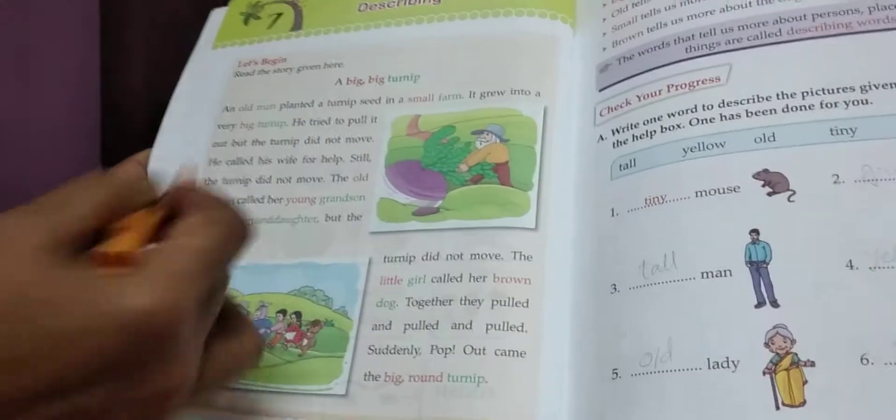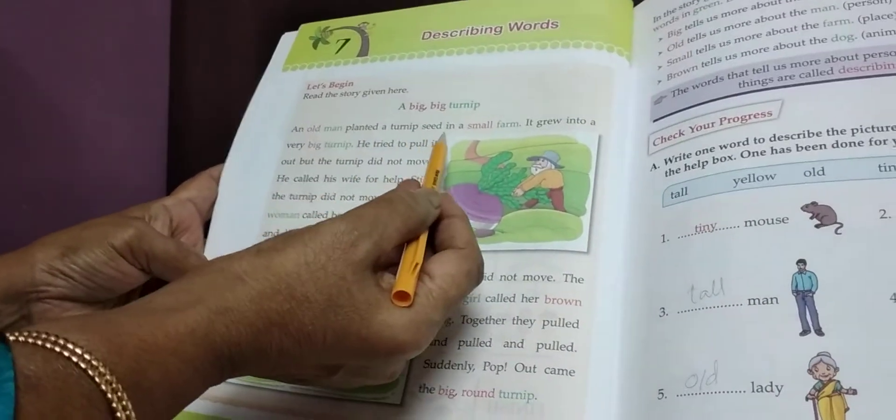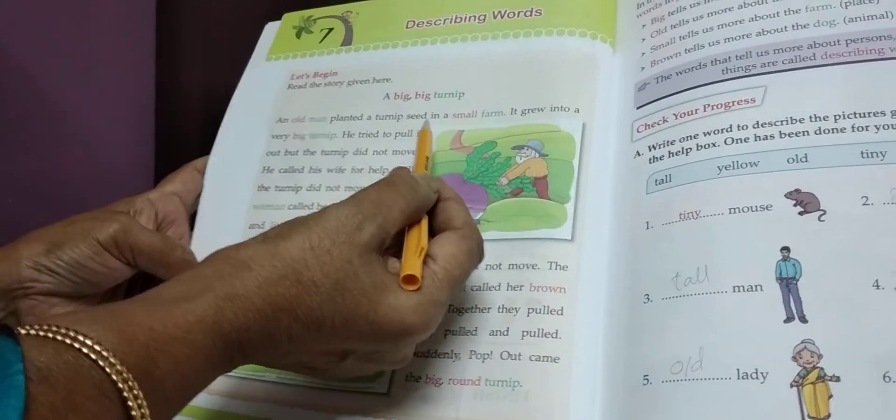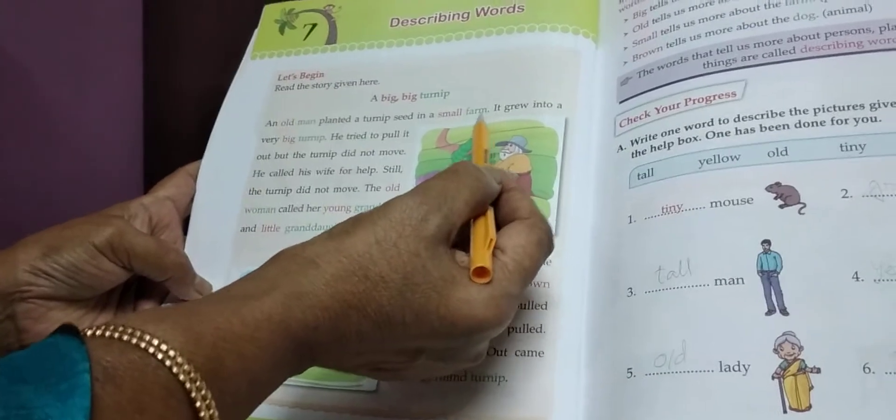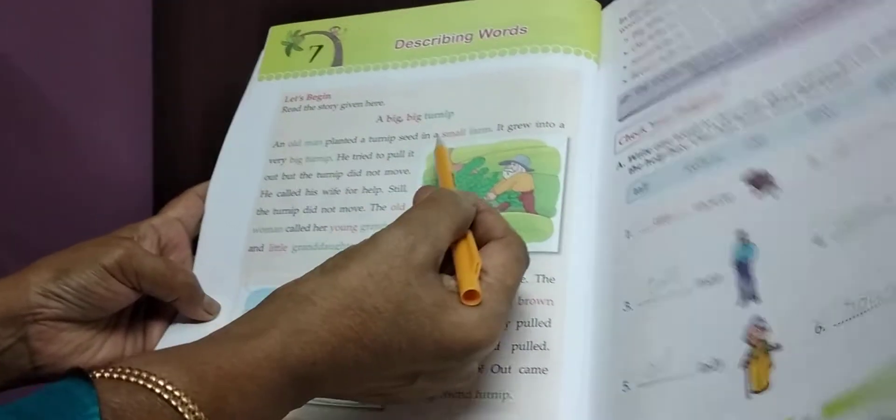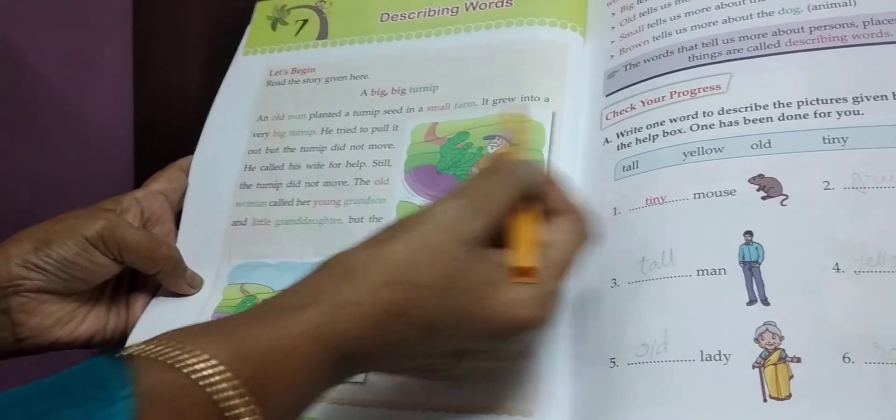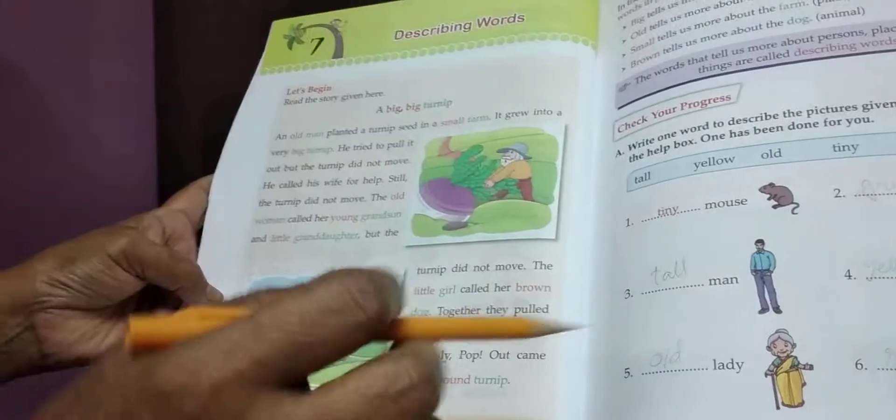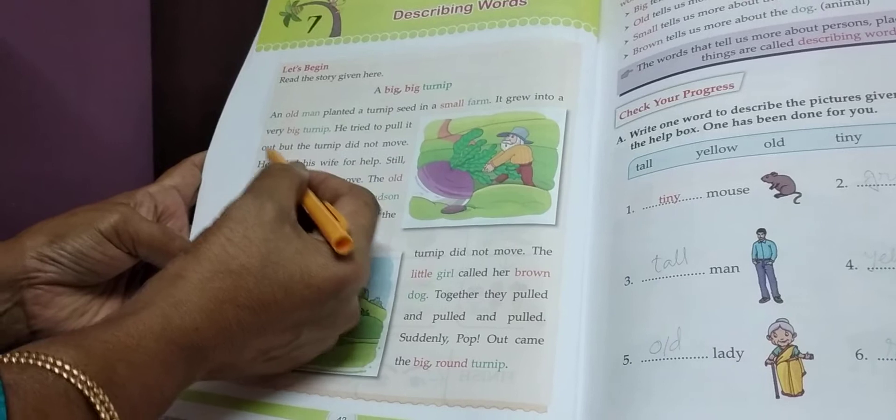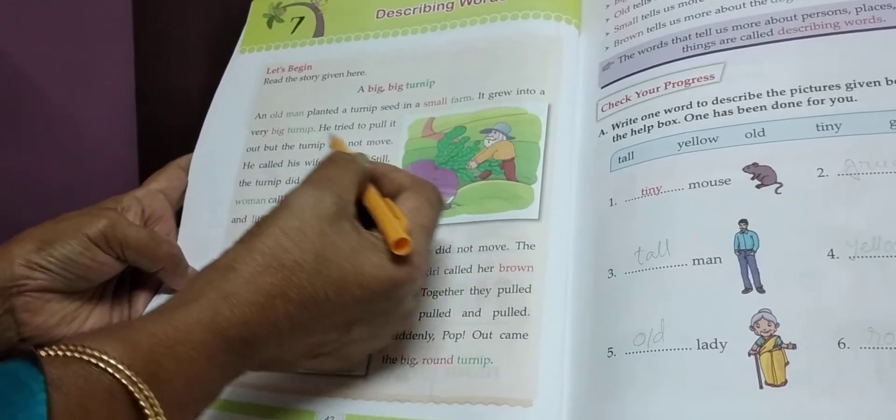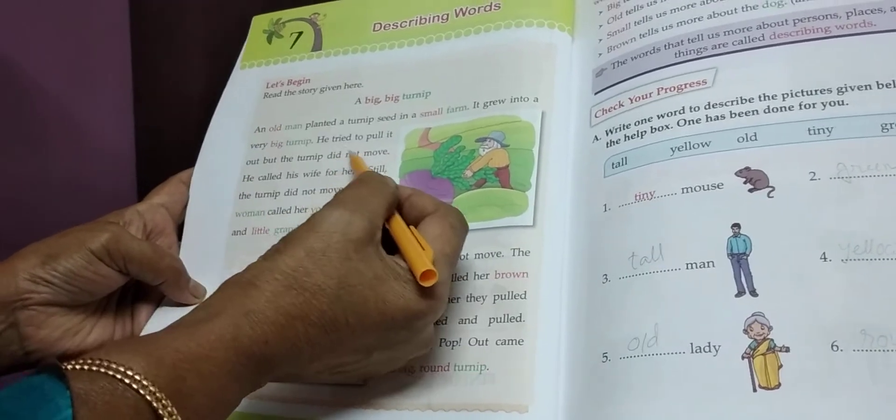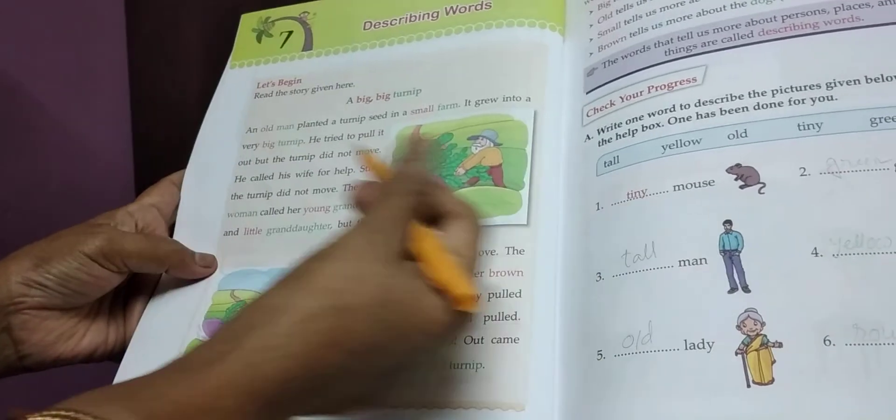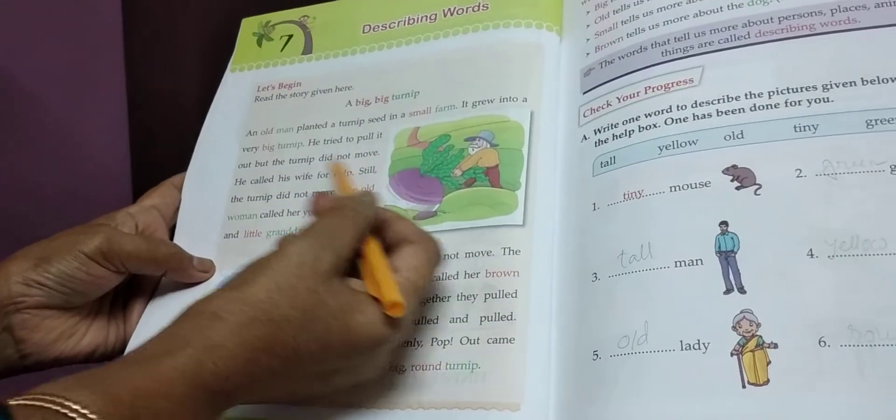Describing words. There is a story in describing words, students. I will read it now. An old man planted a turnip seed in a small farm. An old man planted turnip on his farm. It grew into a very big turnip. A big turnip grew. He tried to pull it out but the turnip did not move.